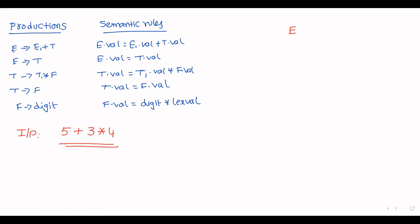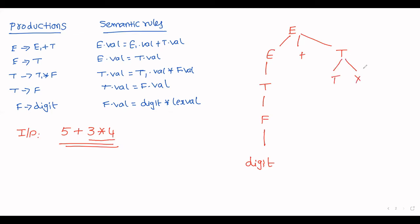First, E → E + T. To separate parent and child nodes we use E1 notation, but in the parse tree you can write it directly as E + T. Then E → T, T → F, F → digit, T → T * F, and the remaining F → digit productions for each leaf node.